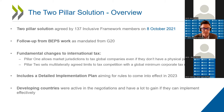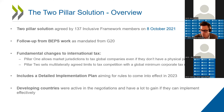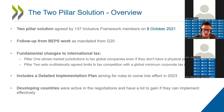Pillar 2 sets multilaterally agreed limits on tax competition. The global minimum tax rate of 15% means that regardless of whether there are tax holidays, tax avoidance, profit shifting, or other arrangements, there will be a 15% minimum tax at the end of the day. This comes with a detailed implementation plan — the idea is to have this all in effect in 2023, which is a very ambitious timeline. A very important point is that developing countries, through the Inclusive Framework, were very active in the negotiations and have a lot to gain if they can implement the rules effectively.